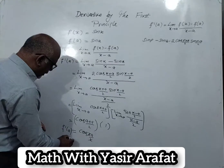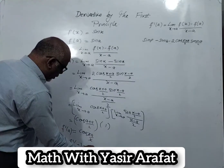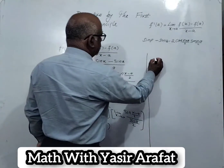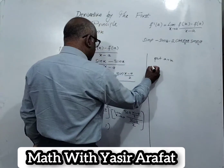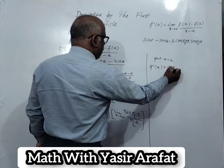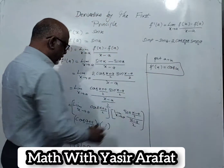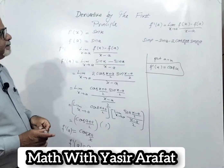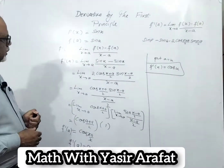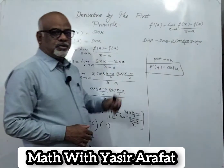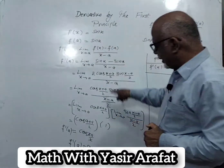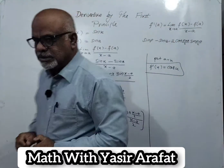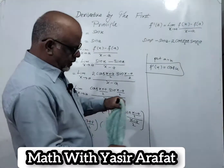So 2a over 2 simplifies, and this gives us cos of a. We then put the value of a equal to x, so f prime x equals cos x. The derivative of sin x is cos x by using the first principle. Now we are going to discuss another question: the derivative of tangent x.